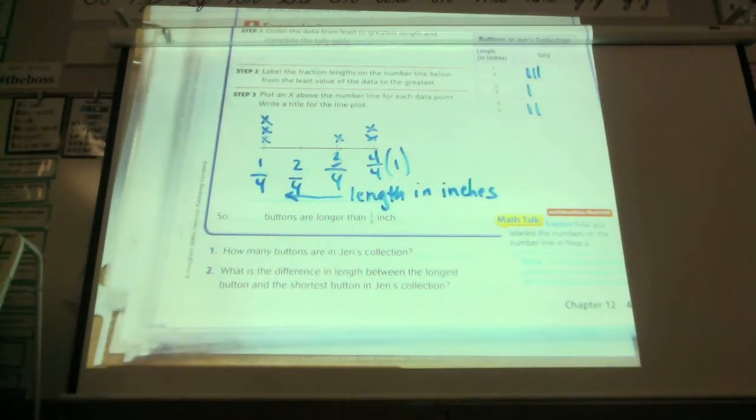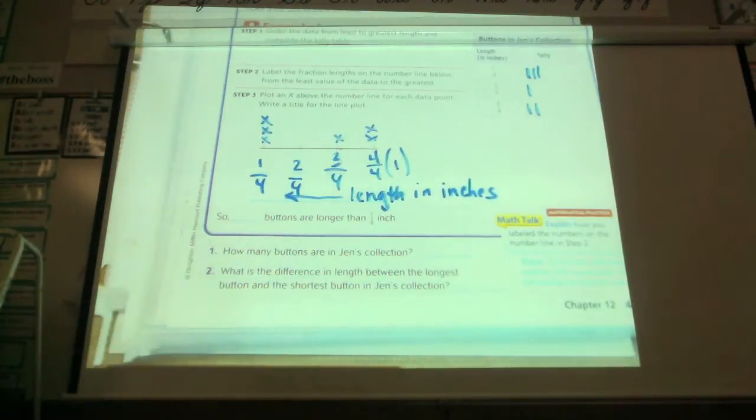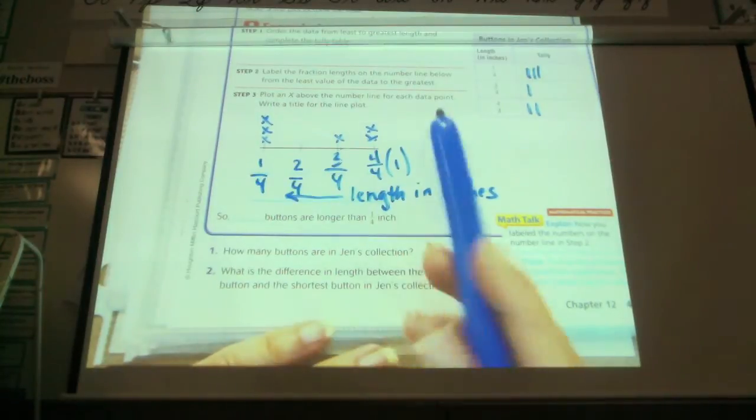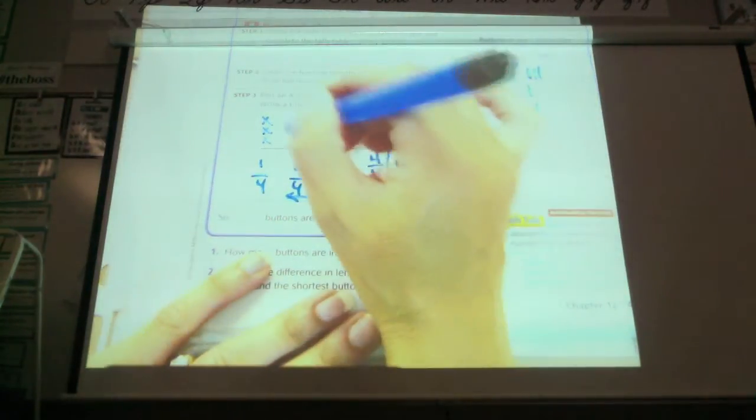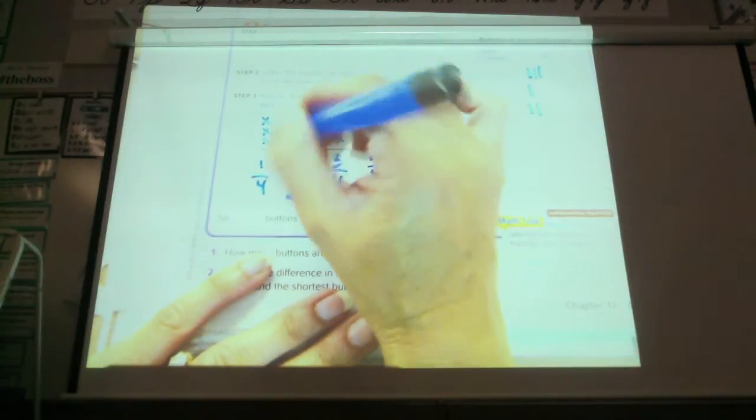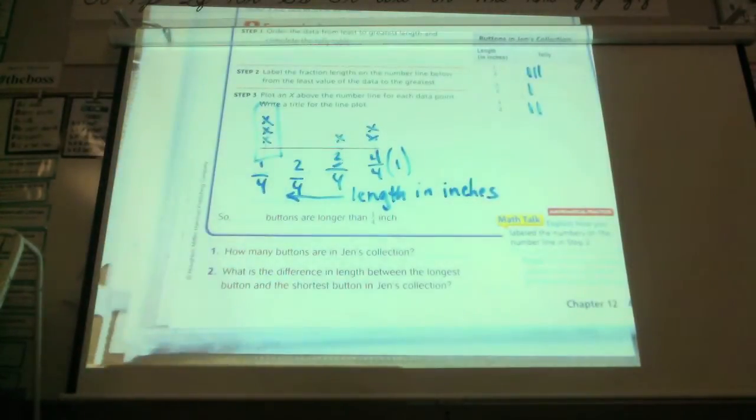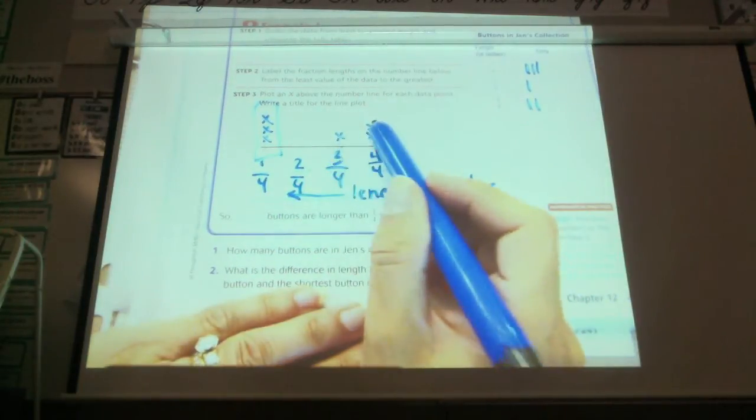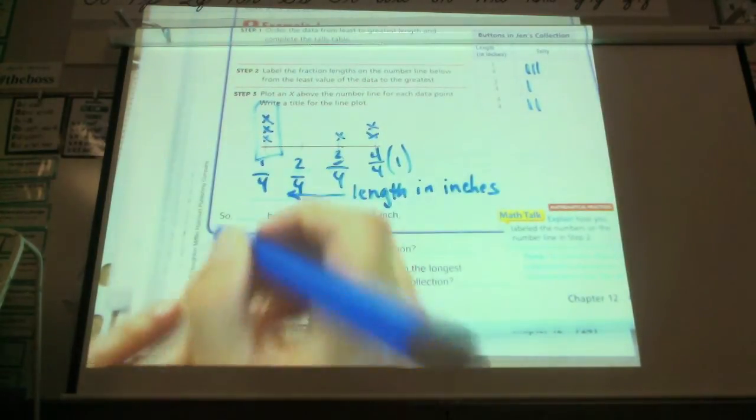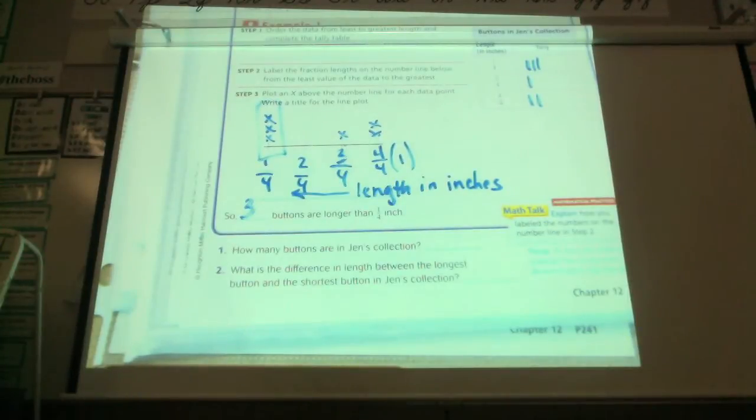The question says, how many buttons were longer than one-fourth inch? When we look at the top, that's what it said. So how many buttons are longer than a fourth of an inch? Can I look at my line plot and decide how many are bigger than a fourth of an inch? Raise your hand if you can tell me how many are larger than a fourth of an inch. Show me on your fingers how many are larger than a fourth of an inch. Okay, she said you add these two X's and this one X because here's the one-fourth mark, right? Right here. So anything greater than that is going to be larger. So there's one, two, three that are larger. So three buttons are larger than one-fourth of an inch.